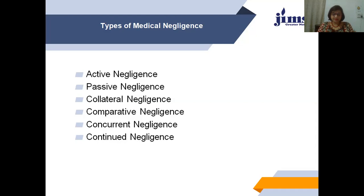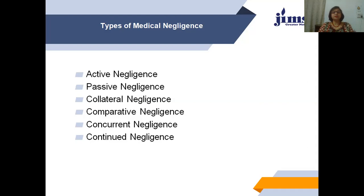Comparative negligence: this type can be applied to more than one act or omission — for example, the mistake of giving the wrong injection to a patient can be done by a single doctor or by two doctors altogether. Concurrent negligence is almost similar to comparative negligence and refers to negligence occurring by two or more doctors simultaneously.